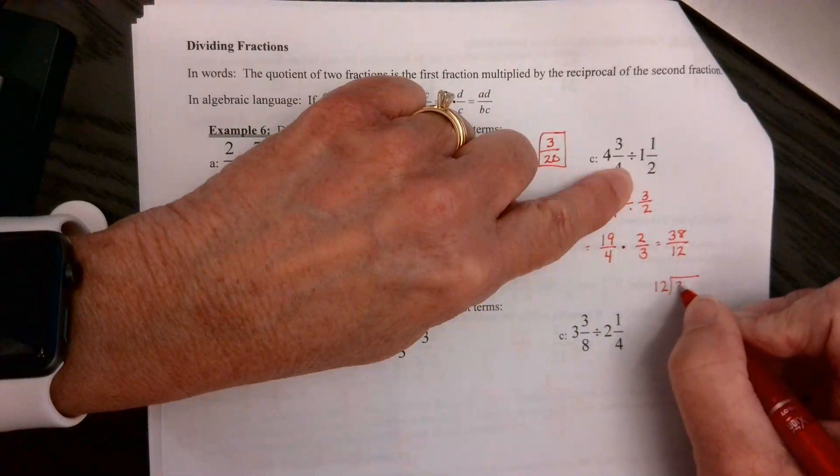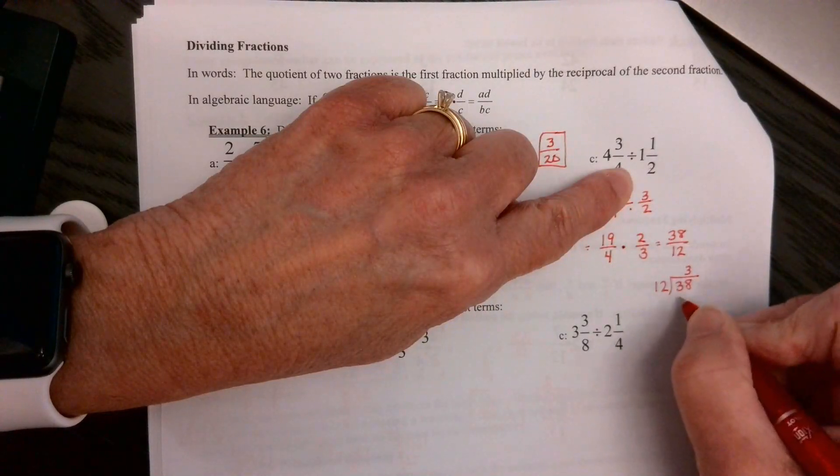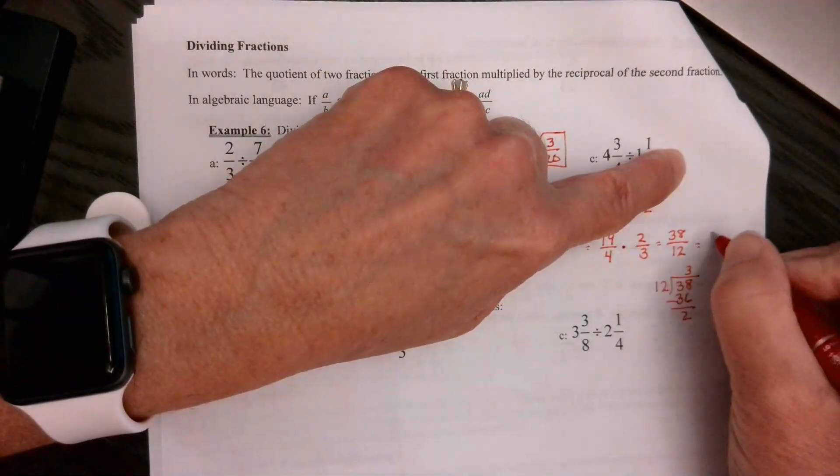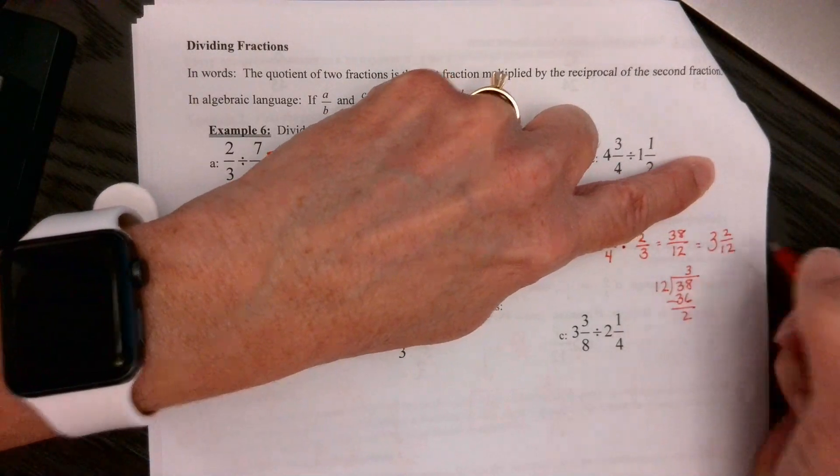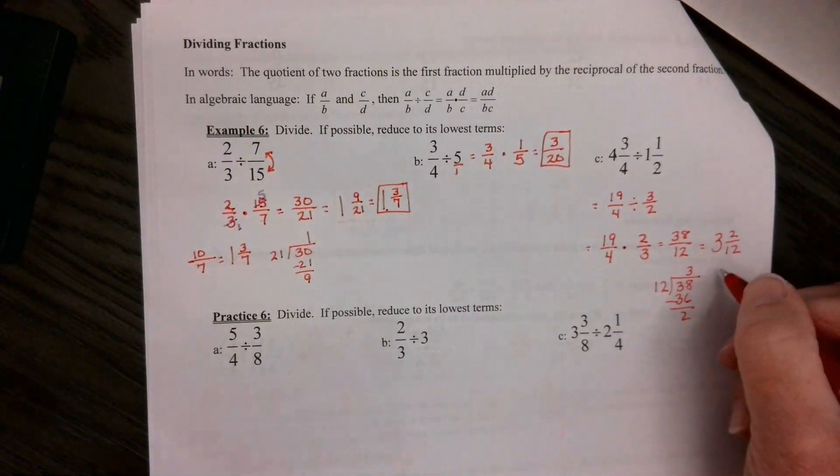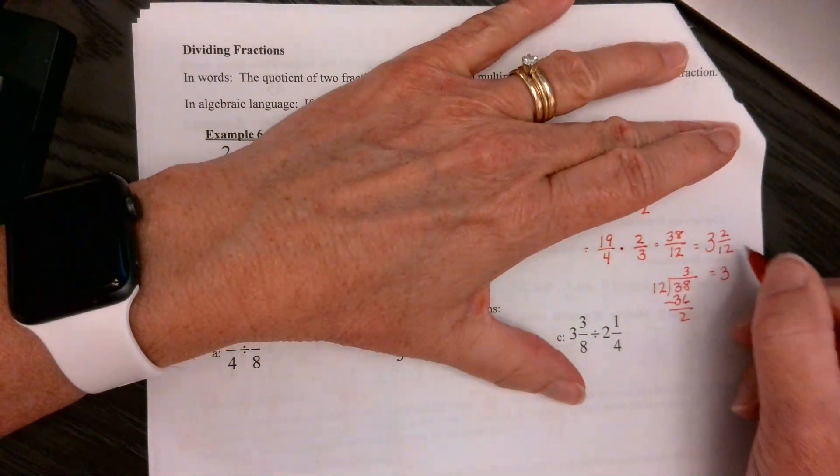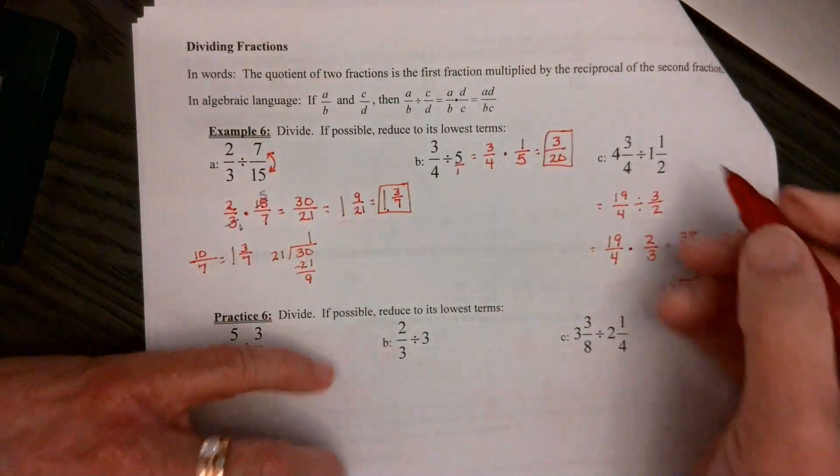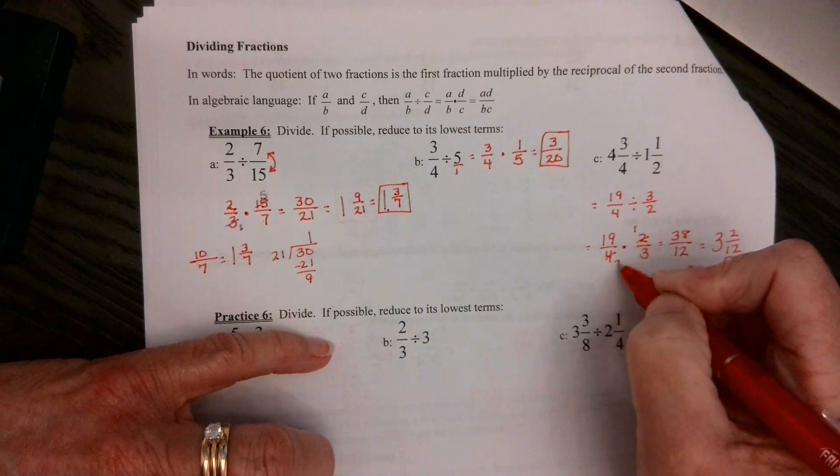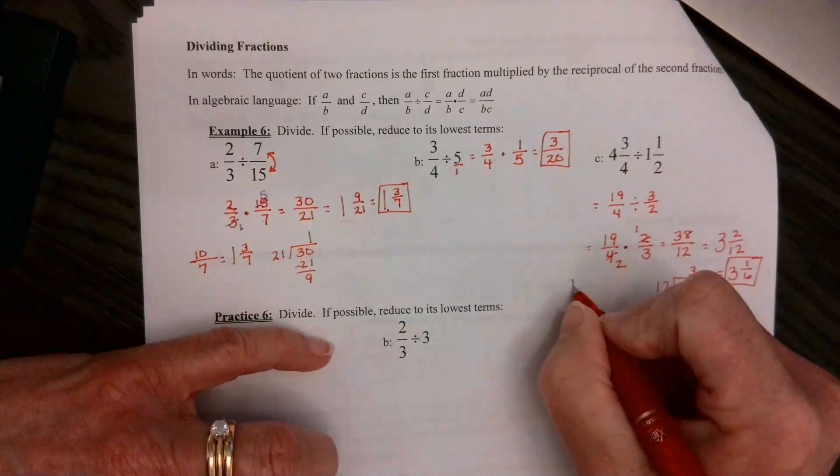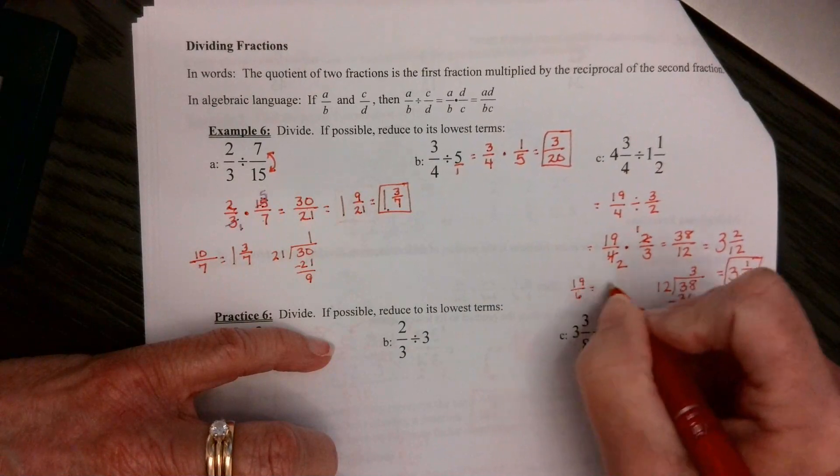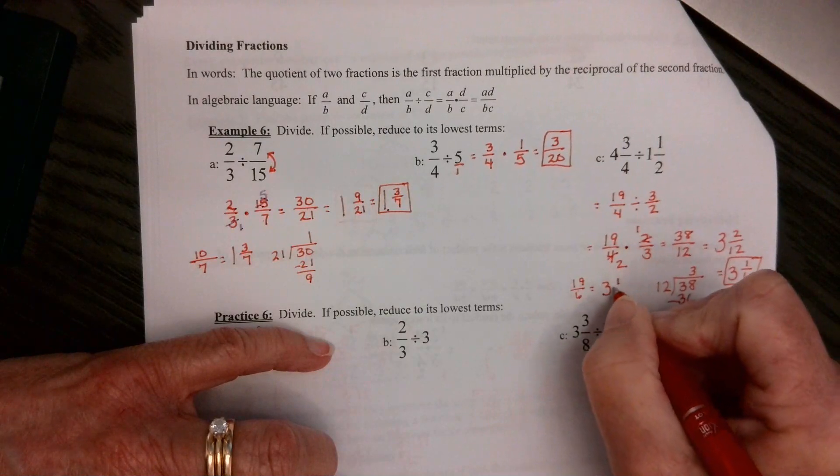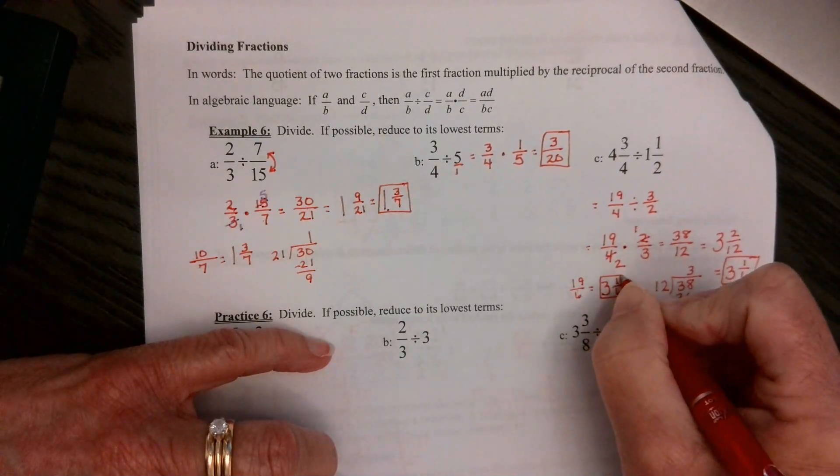12 goes into 38 three times, which gives us 36. We have 2 over 12, so it's 3 and 2/12, but 2/12 will reduce to 1/6. 2 goes into 2 one time, into 12, 6. Okay, again, I would have said the 2 and the 4 cancel, and I would have gotten 19 over 6, and then 6 goes into 19 three times. It gives us 18, so I have 1 left over over 6. So I'm just not dealing with as large numbers.